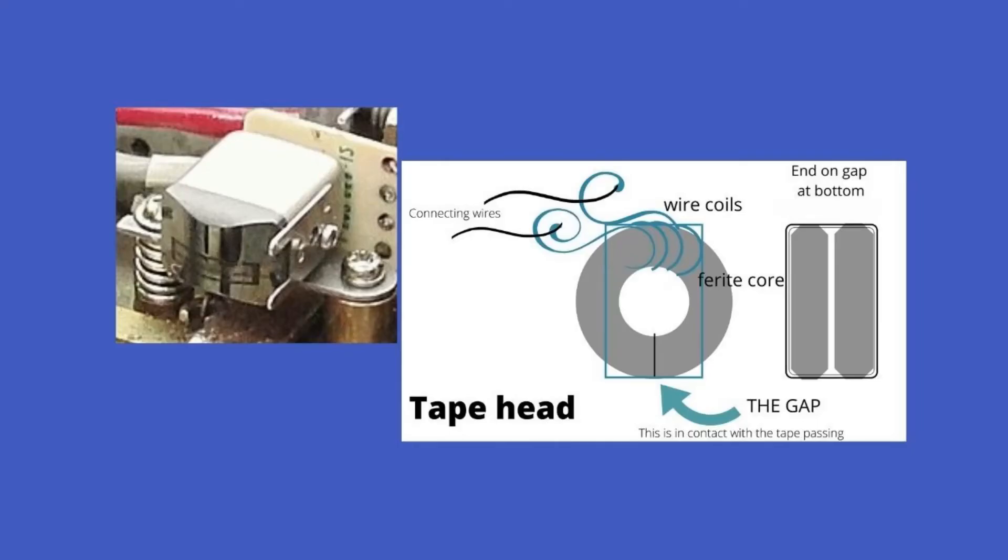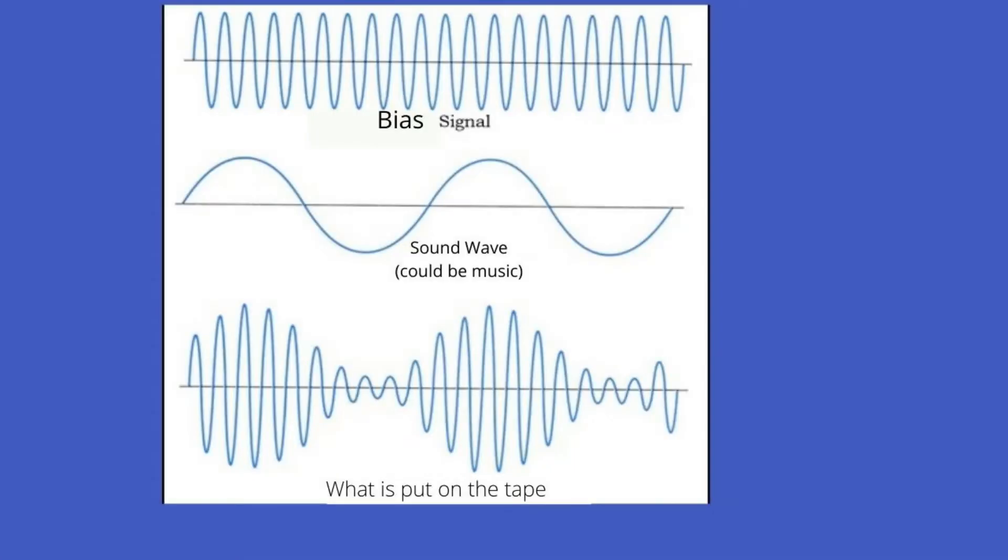Hiss is caused by the granules of magnetic particles going past the head and producing a signal. Different sorts of tapes have different sized granules so the hiss is different. The type two granules are finer so the hiss is less. The other thing altered on this is bias. Bias is what actually puts the sound onto the tape. Well you just think of it this way. If it's a high bias it means it's got more push to get it on the tape than if it's a standard bias.